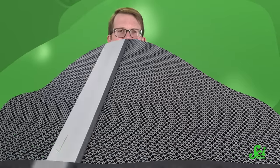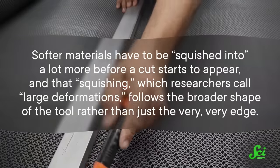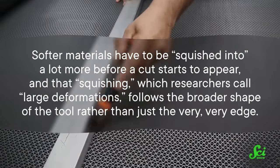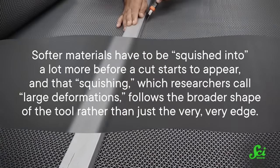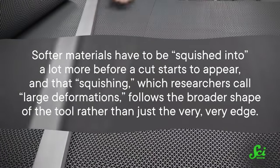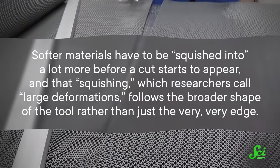That's because, unlike a brittle one, softer materials have to be squished into a lot more before a cut starts to appear. And that squishing, which researchers call large deformations, follow the broader shape of the tool rather than just the very, very edge. So sharpness depends on the thing that you're applying sharpness to. And I'm sorry about this, but it gets even weirder than that.